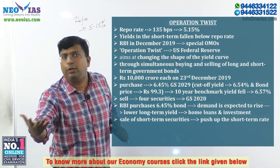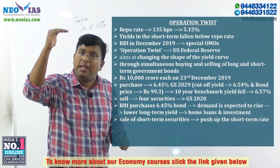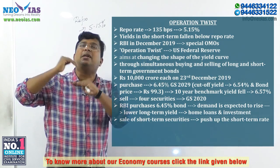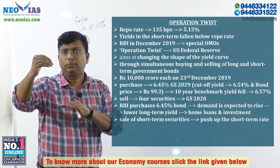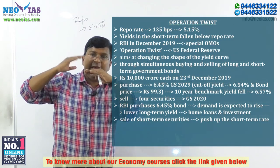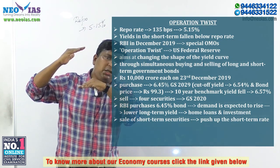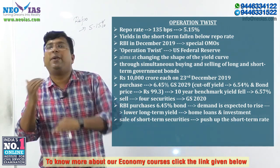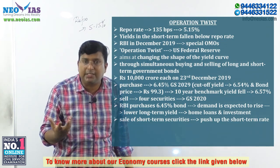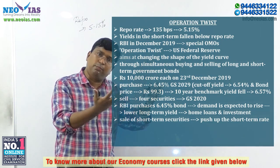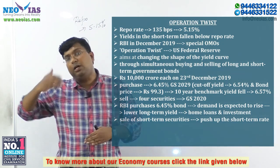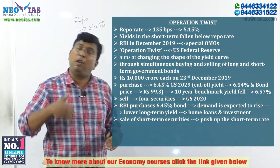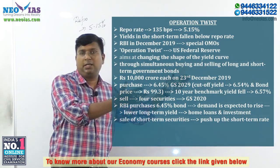The major objective of Operation Twist is that by simultaneously buying long-term government securities and selling short-term securities, RBI tries to lower the 10-year government security yield and increase the short-term securities interest rate. By doing so, it narrows the gap between short-term and long-term government securities interest rates. This operation is what we call Operation Twist.